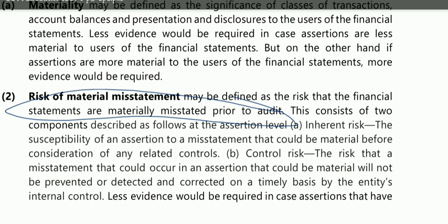There are two types of risk within risk of material misstatement: inherent risk and control risk. Inherent risk is like characteristics inherited from your parents — you didn't do anything for them, they came naturally. Similarly, inherent risk is risk that is already built into the organization — it is inbuilt. Inherent risk is the susceptibility of an assertion to a misstatement that could be material, before consideration of any related controls.